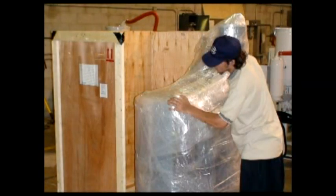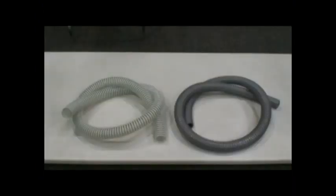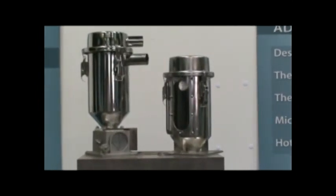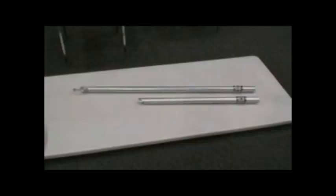After uncrating the MJ3, it is necessary to identify and confirm all the components which were shipped based on your specific order. Among the common components are vacuum and material hoses, receiver hoppers, proximity sensors, and suction wands.